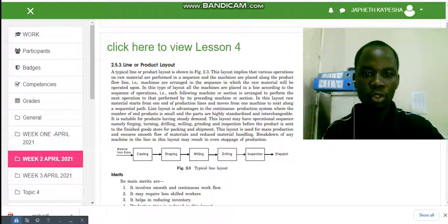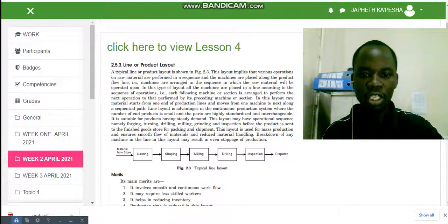Machines are arranged in sequence in which the raw material will be operated upon. In this type of layout, all machines are placed in a line according to the sequence of operation. Each following machine or section is arranged to perform the next operation to that performed by its preceding machine or section.